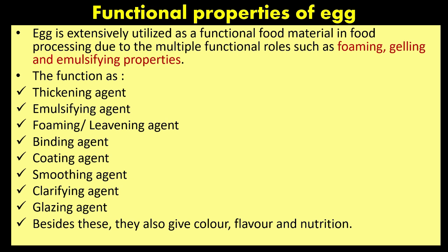Functional properties of egg: egg is extensively utilized as a functional food in food processing due to multiple functional roles such as foaming, gelling, and emulsifying properties. Its functions include acting as a thickening agent, emulsifying agent, foaming/leavening agent, binding agent, coating agent, smoothing agent, clarifying agent, and glazing agent. Besides these, eggs also give color, flavor, and nutrition.